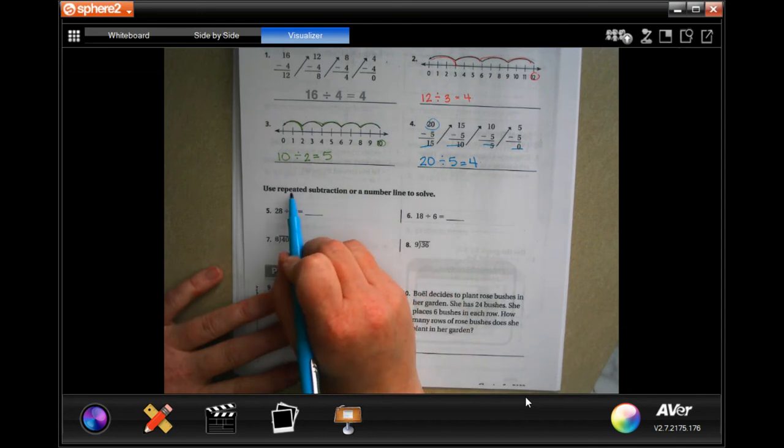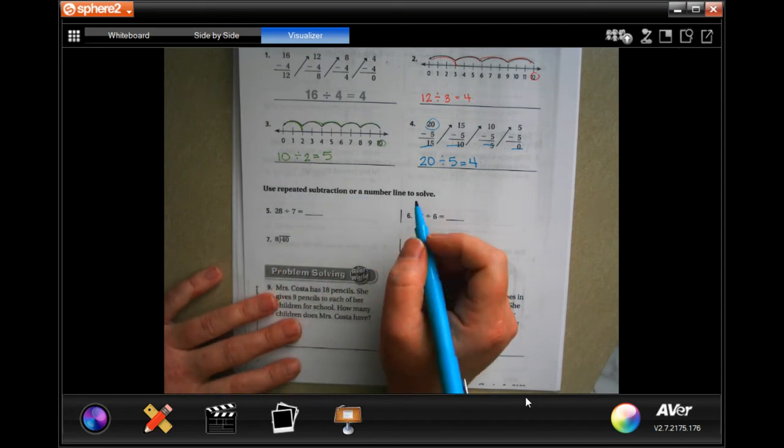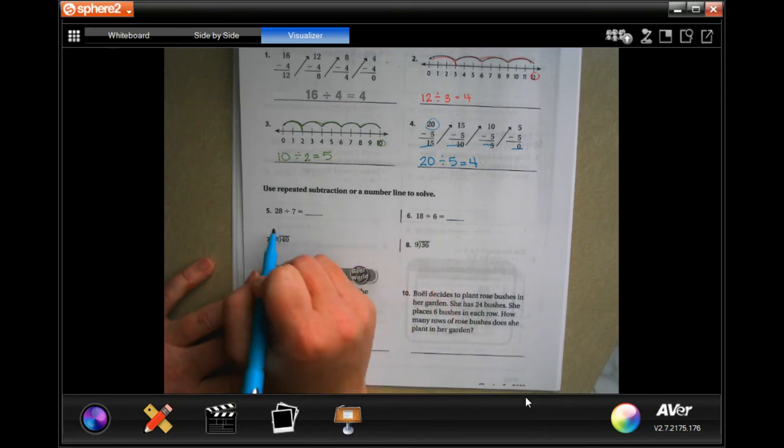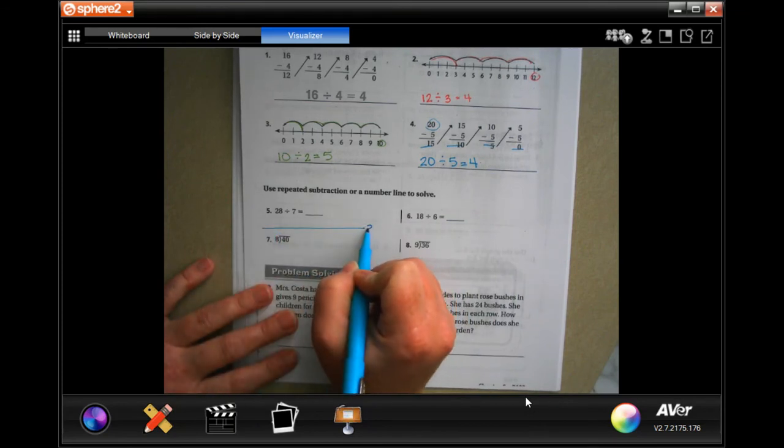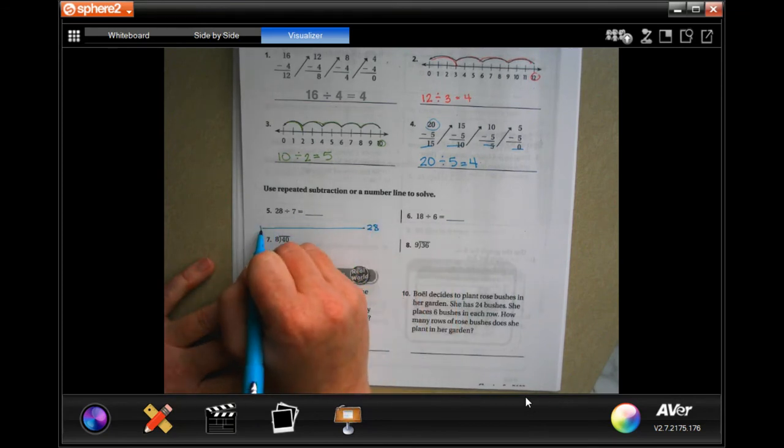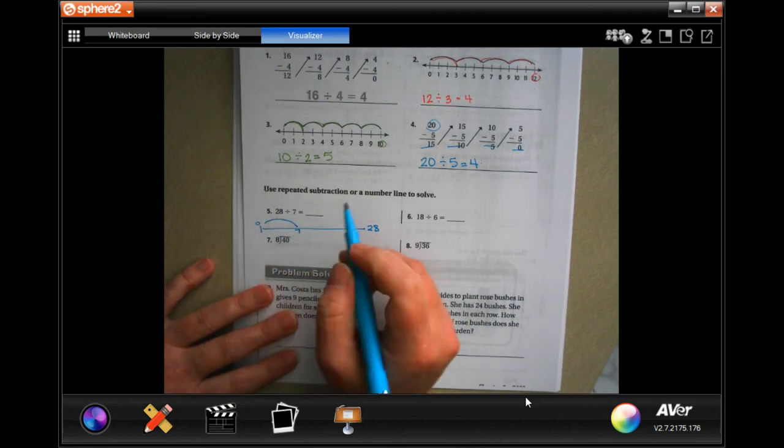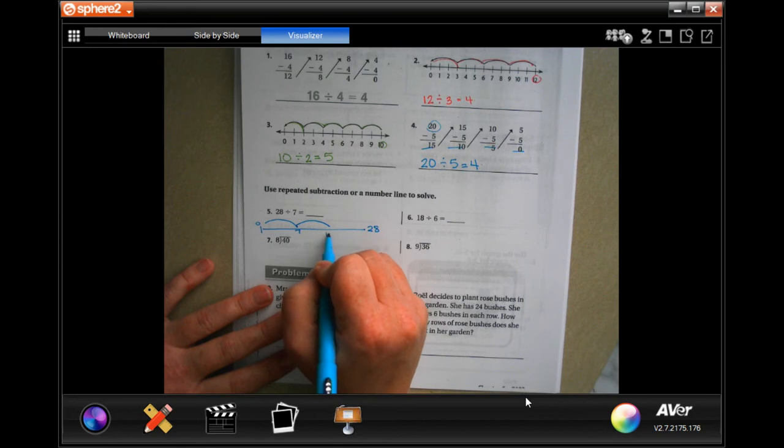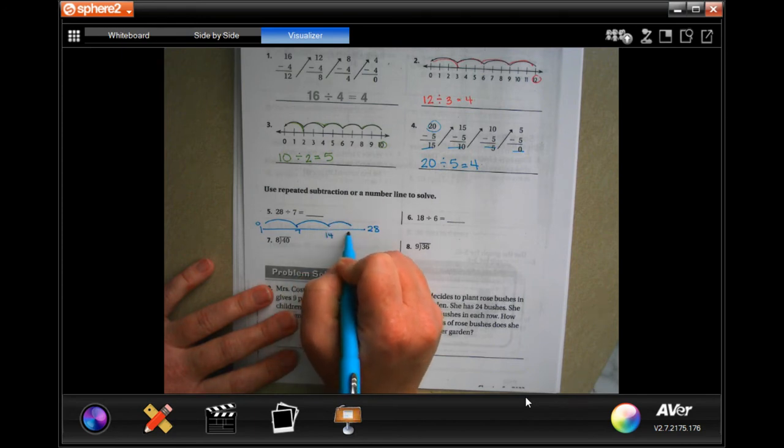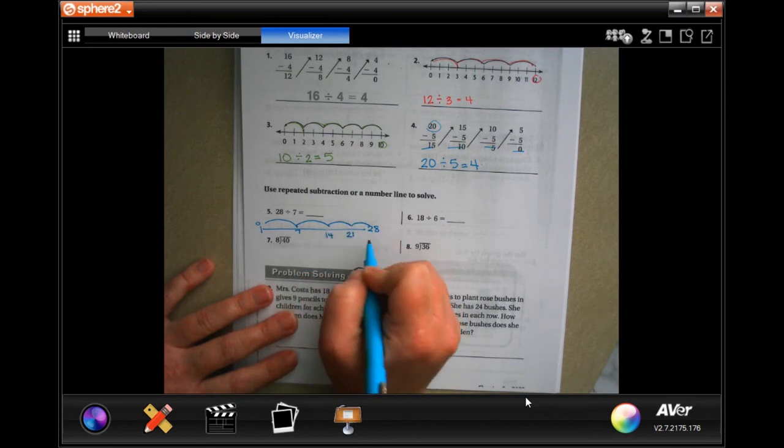You can use repeated subtraction or a number line to solve. So 28... I'm going to do a jump to 7, then to 14, then to 21, and then to 28.